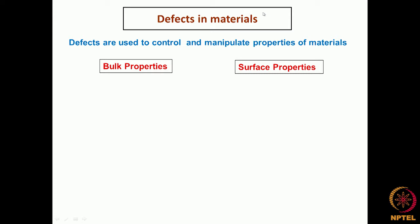What are the types of defects which we can have in a material? There are various types of defects possible which we will come to later. Before that, what are the types of properties which these defects affect? One is the bulk property of the material, and two is the surface property of the material.